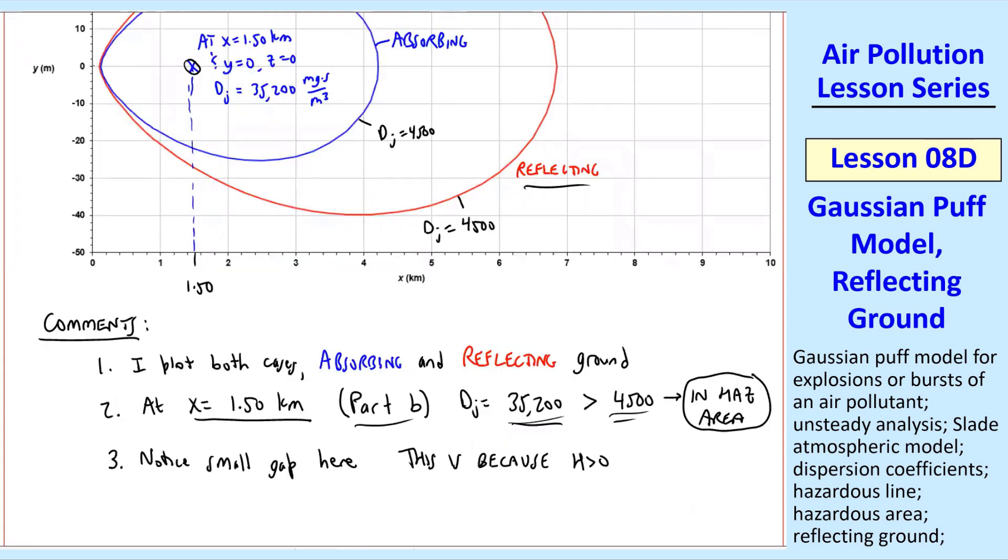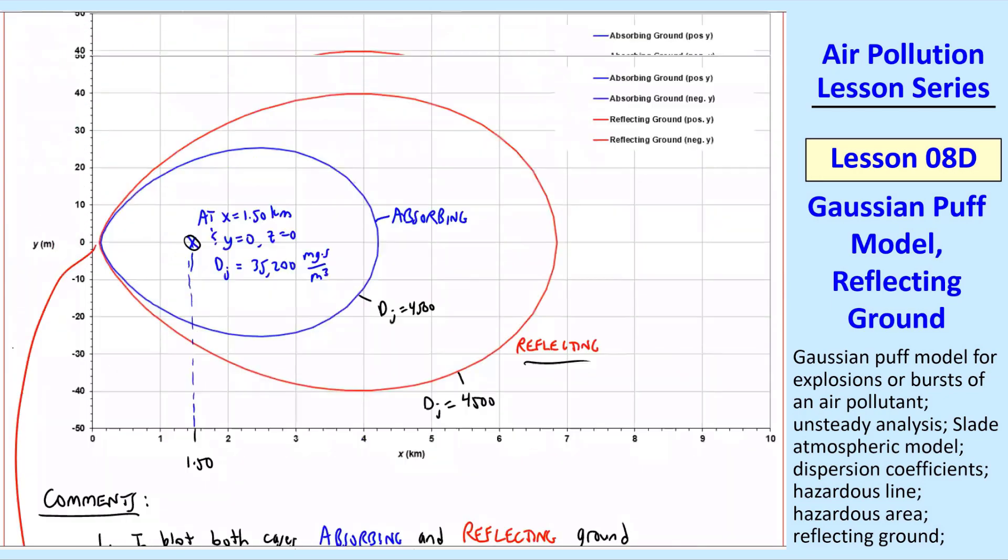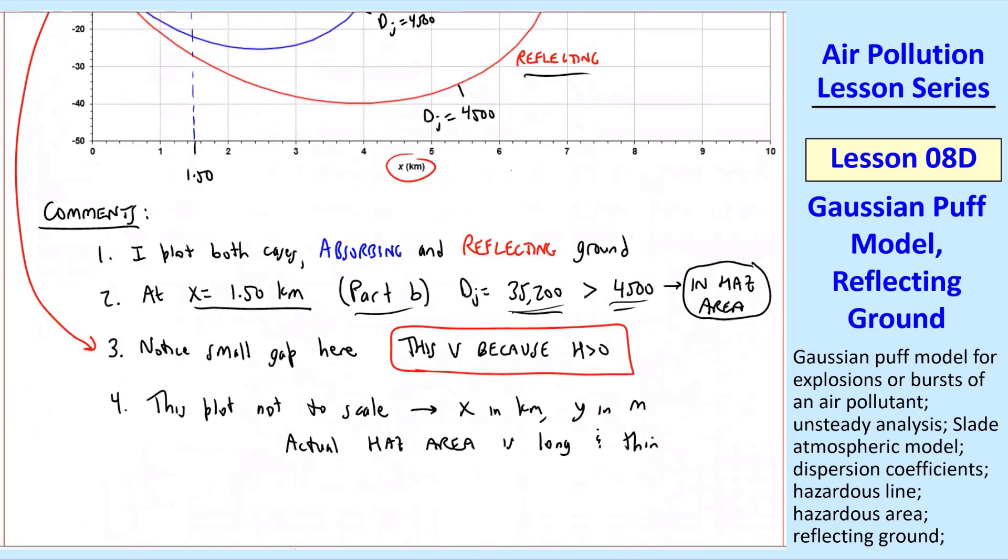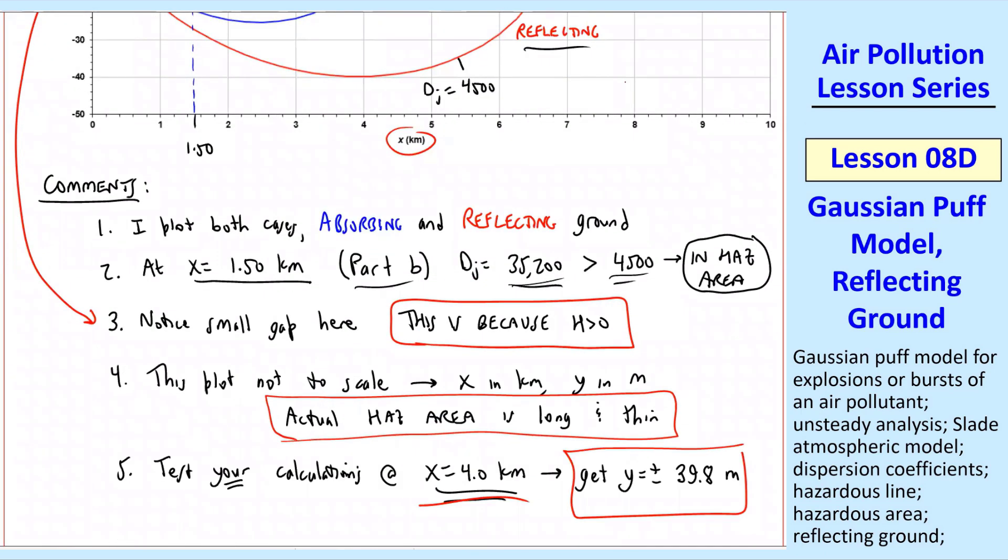Number three, notice this small gap right here. It doesn't start right at zero, it starts at about 0.1 kilometers, and that is because H is greater than zero. You don't feel the effect until a little bit downwind because the puff is up in the air at some elevation, not right on the ground. Comment four, this plot is not to scale. I'm plotting Y in meters and X in kilometers. The actual hazardous area is long and thin, similar to what we found with the plumes.